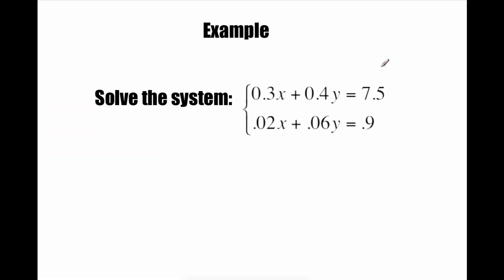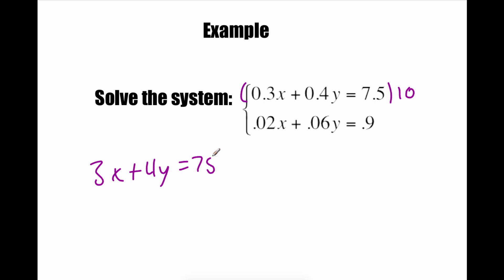Our next example has a lot of decimals: 0.3x + 0.4y = 7.5 and 0.02x + 0.06y = 0.9. I don't like working with decimals, so I'll multiply to clear them. The top equation has tenths, so multiplying by 10 gives 3x + 4y = 75. The bottom equation goes to the hundredths, so multiplying by 100 gives 2x + 6y = 90.